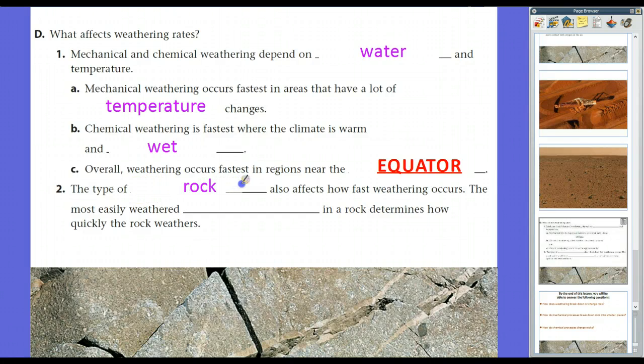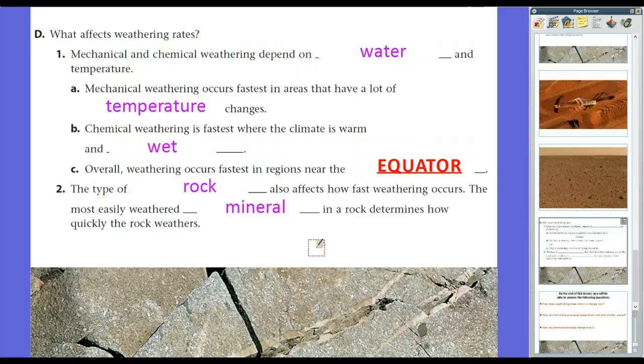In addition, the type of rock also affects how fast weathering occurs. In terms of a rock, which is a group of minerals, the most easily weathered mineral in a rock determines how quickly the rock weathers. And as a rule of thumb, the lower the mineral is on the Mohs scale, the more easily it will be weathered because, remember, the Mohs scale is how easily a rock is scratched or its surface area is compromised. So, naturally, wind blowing will naturally tear apart talc much quicker than it will quartz because quartz is higher on the Mohs scale than talc. And, also, calcite will dissolve much more quickly because its number is lower and it reacts much easier with oxygen.